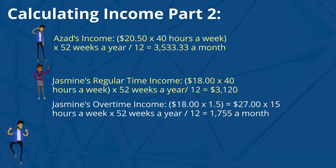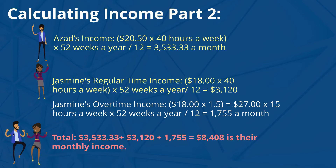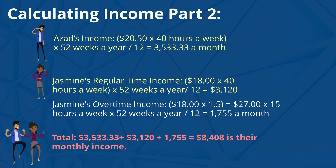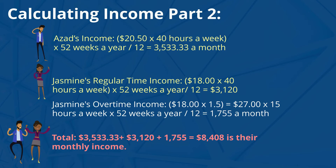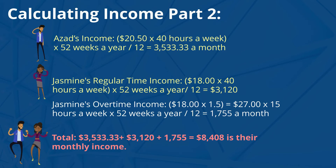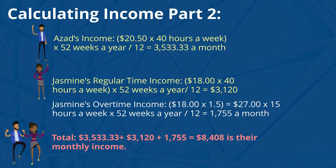Now let's add all of them together. Asad's income of $3,533 a month, plus Jasmine's regular time income of $3,120, plus her overtime income of $1,755, is equal to $8,408 for their monthly income.